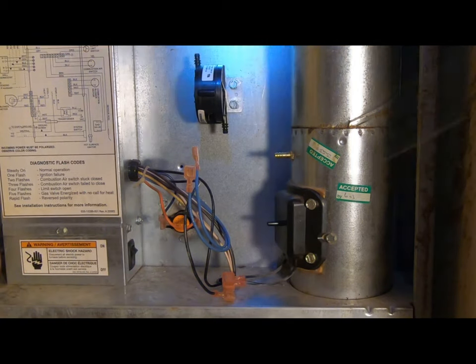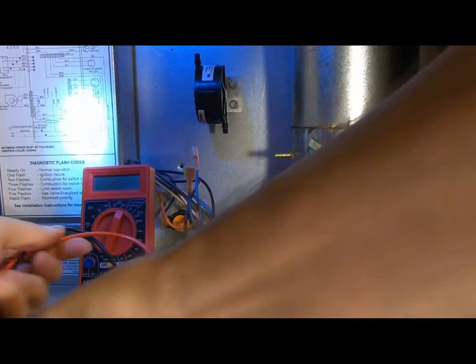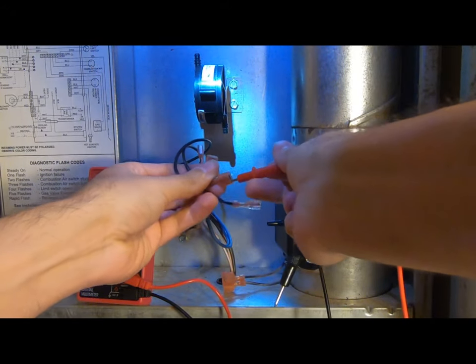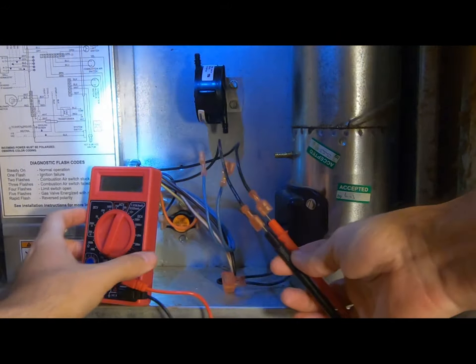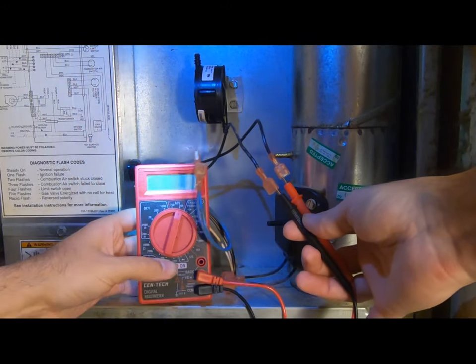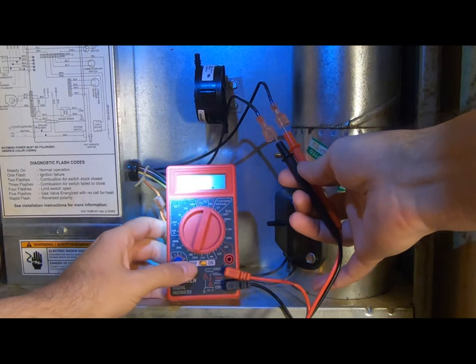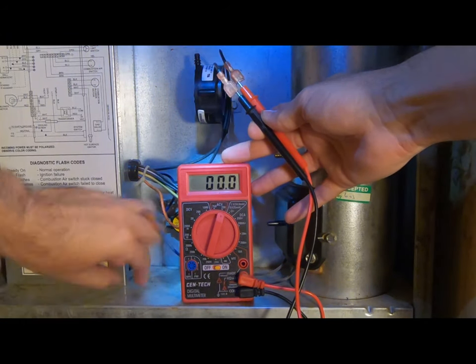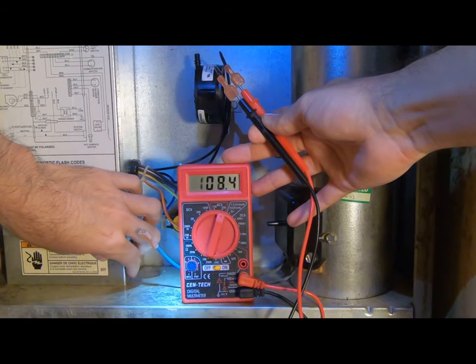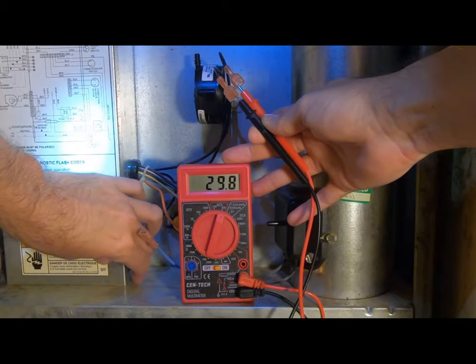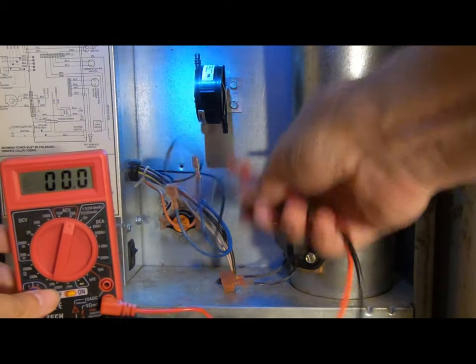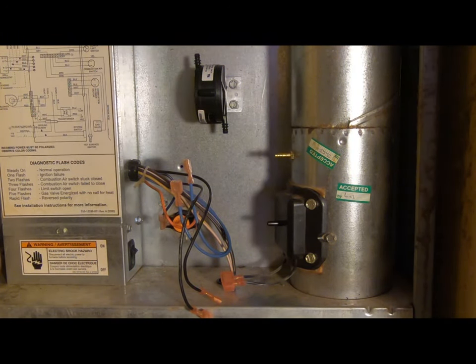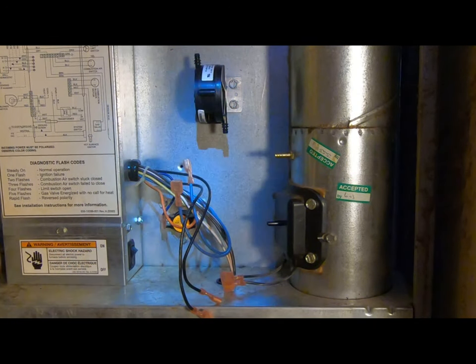But just to double check, just to make sure it was getting power, we'll get out our trusty somewhat abused meter and stick a probe in each of these suckers. Turn it on of course. So here we're showing basically zero. We turn it on. Shazam, 120 volts. So it is sending power to that motor, it is trying to utilize that motor, but the motor is not working.